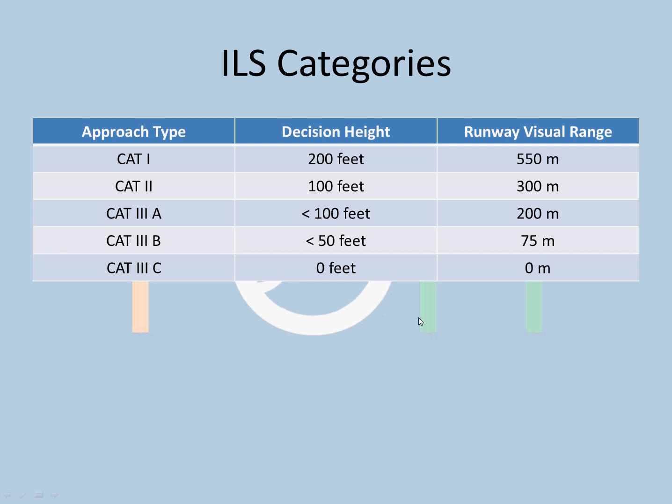ILS categories: these are the ILS categories that we have. Cat 1, Cat 2, Cat 3 Alpha, Cat 3 Bravo, Cat 3 Charlie.